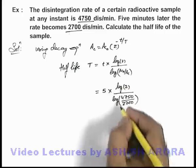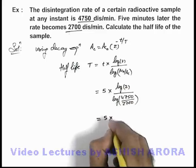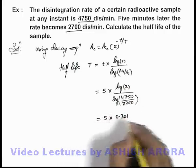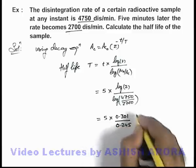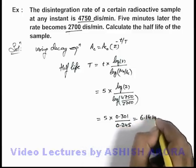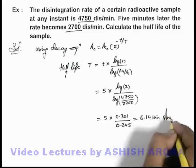If we substitute the numerical values from the log table, this will be 5 times 0.301 divided by 0.245. On simplifying, we'll get 6.14 minutes. That'll be the answer to this problem.